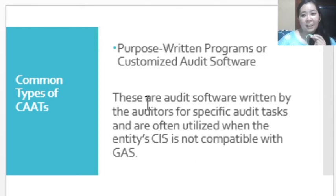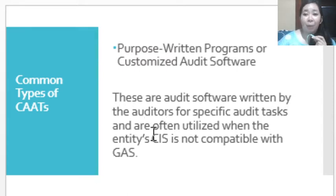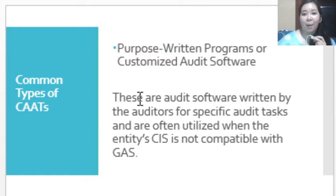The second type is Purpose Written Programs or Customized Audit Software. These are audit software written by the auditors themselves, normally for specific audit tasks. They are often utilized when the entity's CIS is not compatible with the first type of CAATs. Purpose Written means whatever audit procedures the auditor has planned, he can apply them using this CAAT.